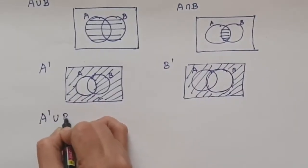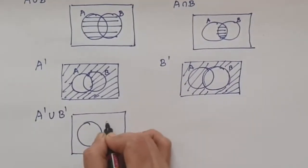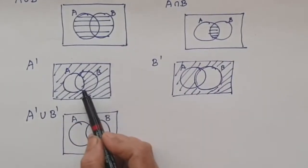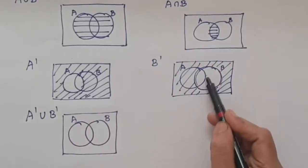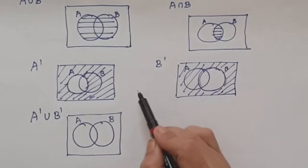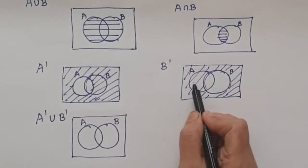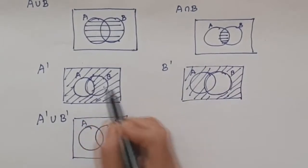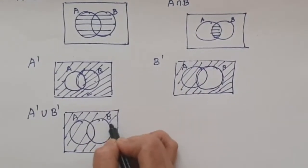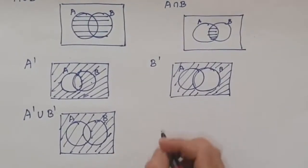Suppose if you need to shade A complement union B complement. In that case, we need to see wherever it is shaded in A complement and wherever it is shaded in B complement. This is the figure for A complement — only circle A is left out. And this is the figure for B complement — only circle B is left out. The part which is not shaded in both diagrams is the common region. So only the common region we leave, and all the rest of the diagram we shade — that is called A complement union B complement.